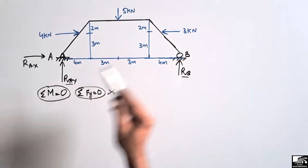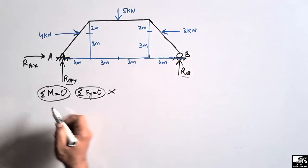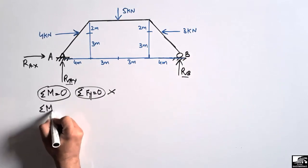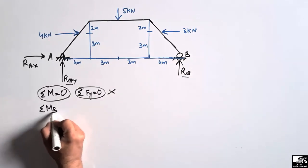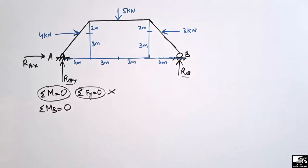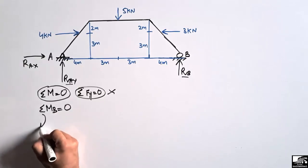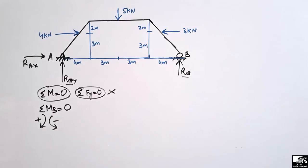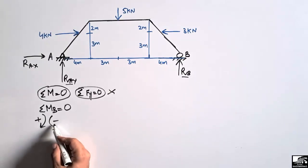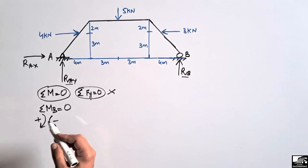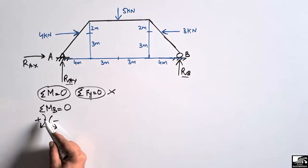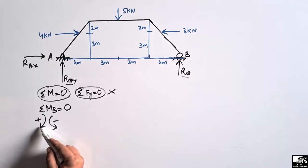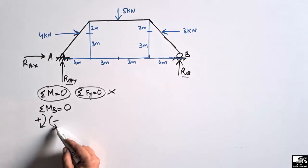So the equation we use is the summation of moments at any point equal to zero. Let's consider the summation of moments at point B equal to zero. We take clockwise moments as positive and anti-clockwise moments as negative as our sign convention. All forces that create a clockwise moment will be taken as positive, and those creating an anti-clockwise moment as negative.